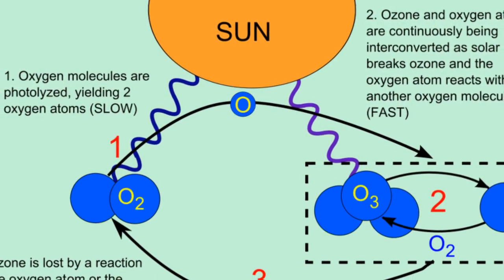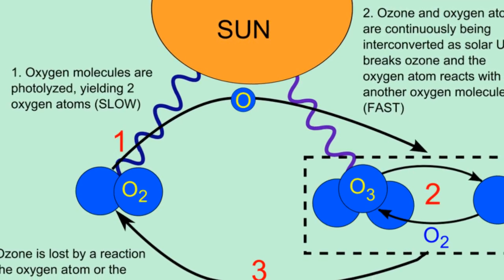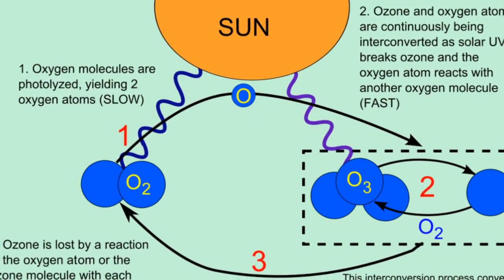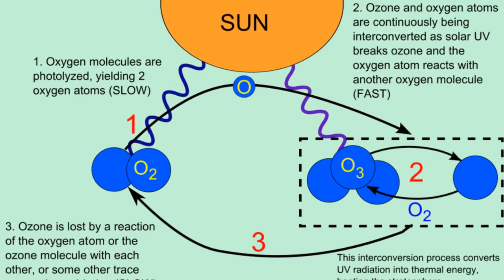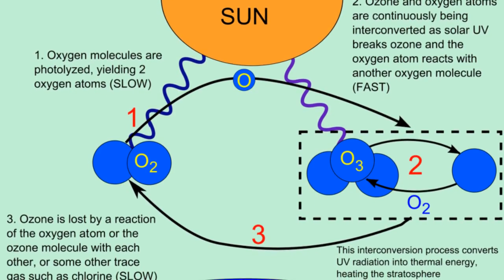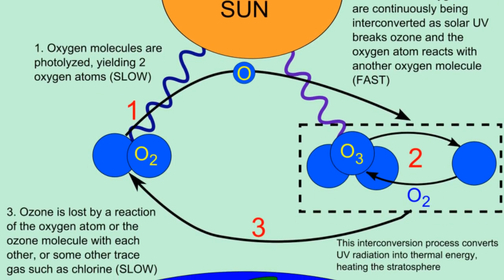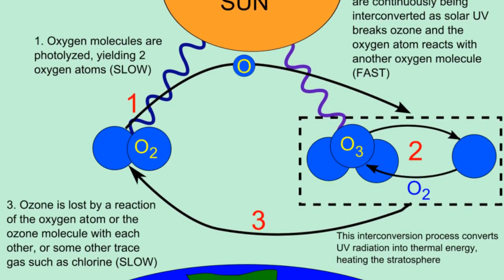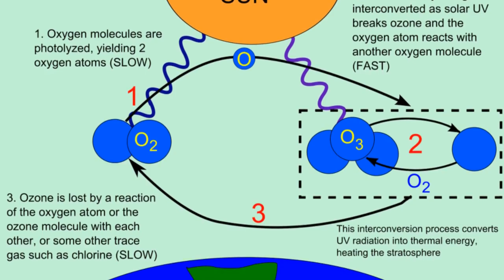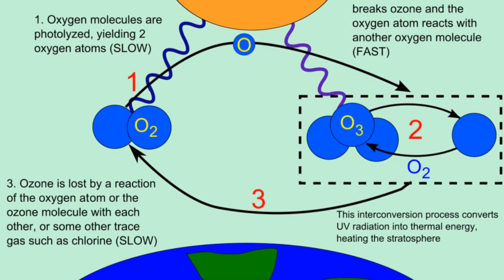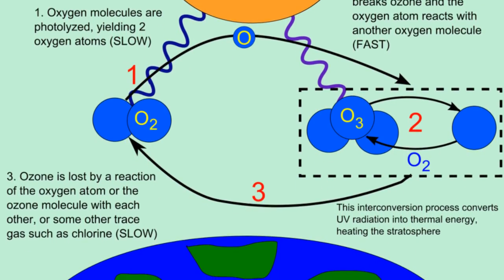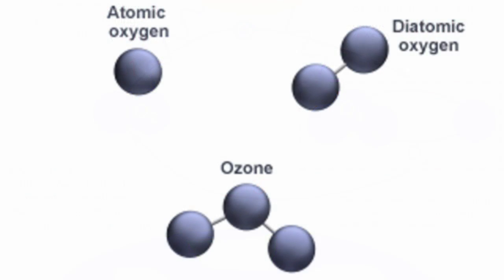The ozone in the Earth's stratosphere is created by ultraviolet light striking ordinary oxygen molecules containing two oxygen atoms, O2, splitting them into individual oxygen atoms — atomic oxygen. The atomic oxygen then combines with unbroken O2 to create ozone O3.